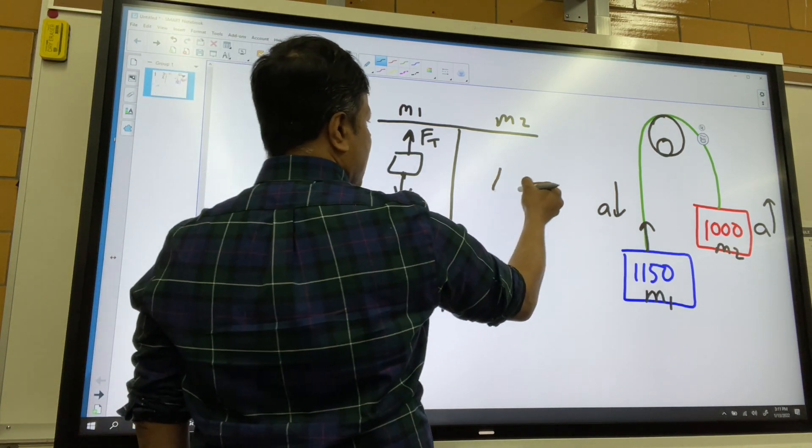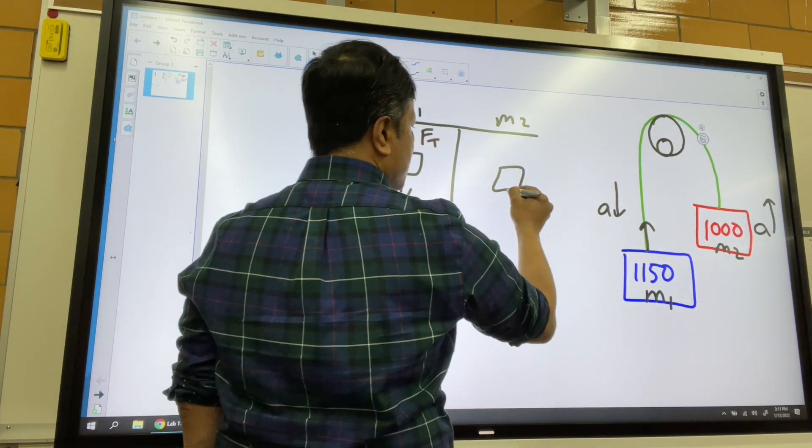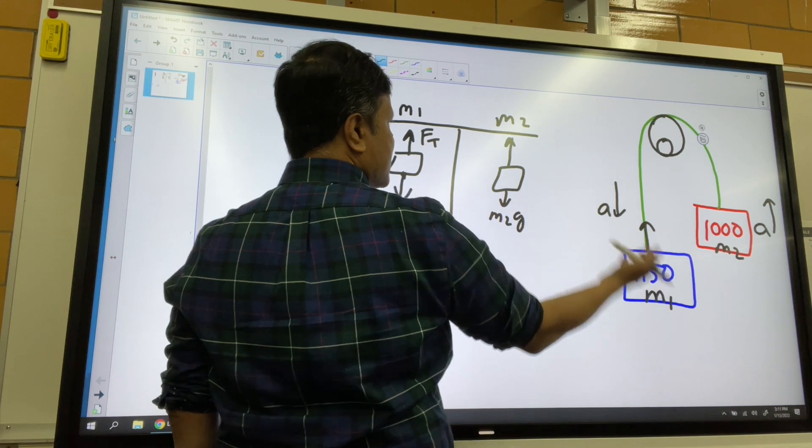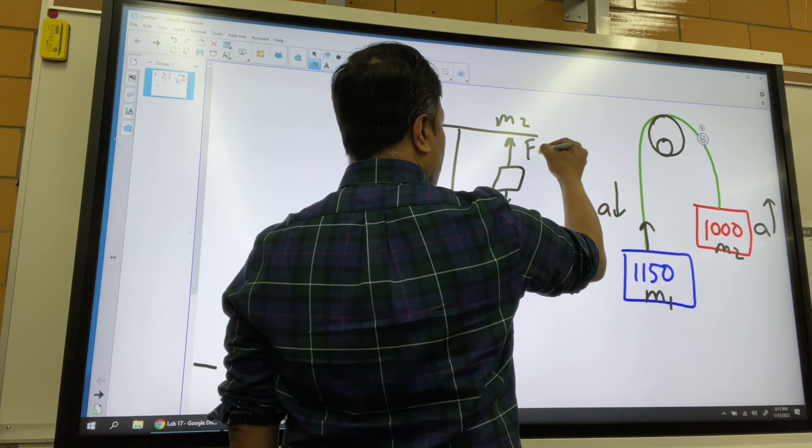How many forces acting on this one? Two forces. M2G. FT has to be bigger because it is accelerating up.